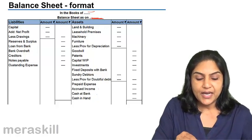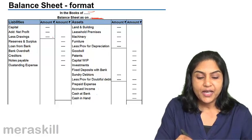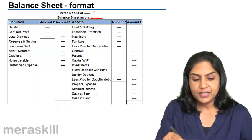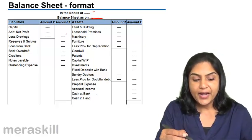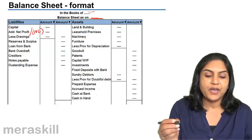On the liability side, what we have is capital, add net profit, less drawings, capital, add net profit or it would be deduct net loss, if any.